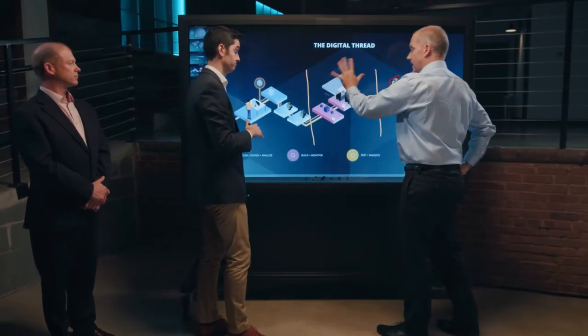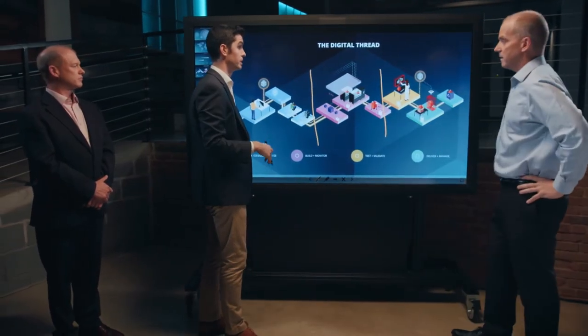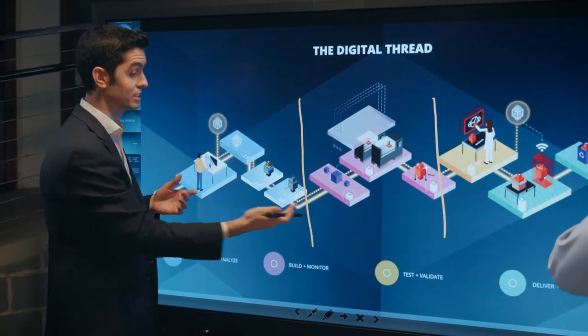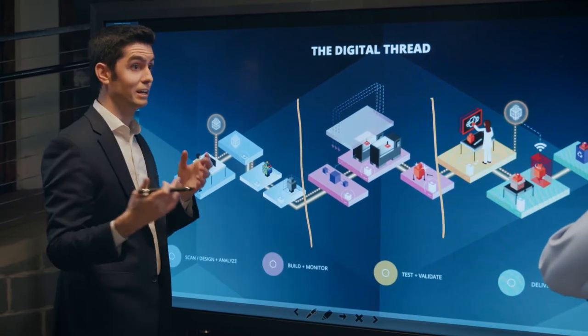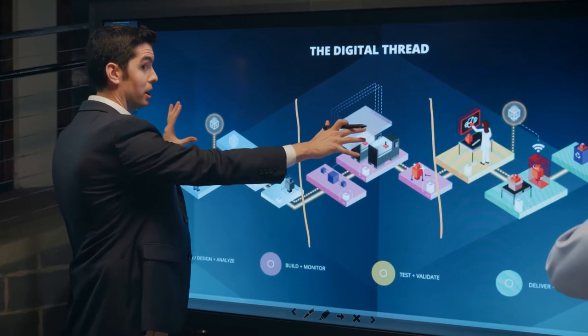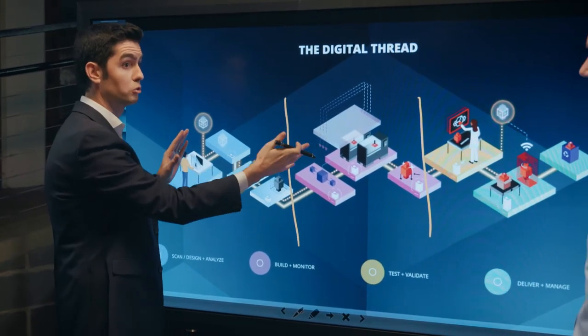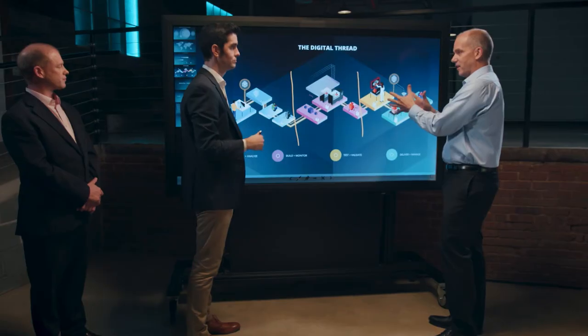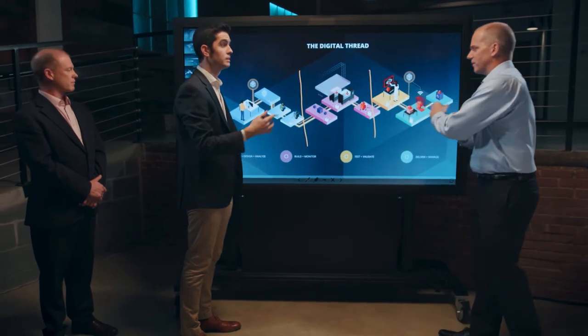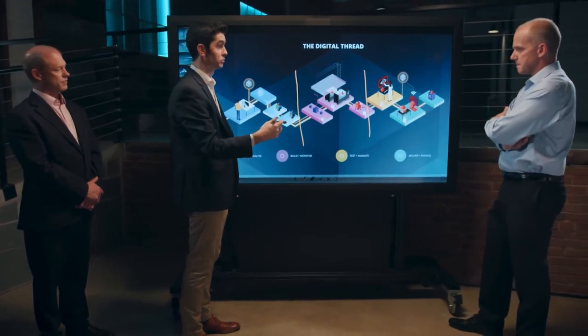All of that data is packaged into what we consider to be an as-manufactured model of the part. So I have as-designed — I know what I wanted — and as-manufactured — I know what I got. In the test and validate step, a testing technician wants to compare that as-manufactured model against the as-designed model to see whether or not we can field the part — does it meet its performance requirements? By comparing those two things, we get a smart inspection protocol that says to look at this particular thing, saving time and money in terms of what techniques or technologies to use.